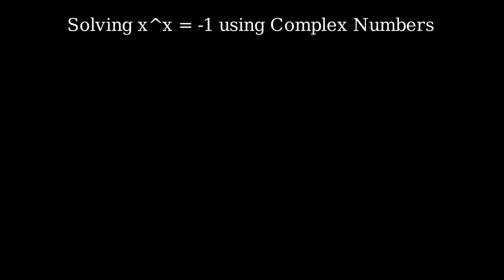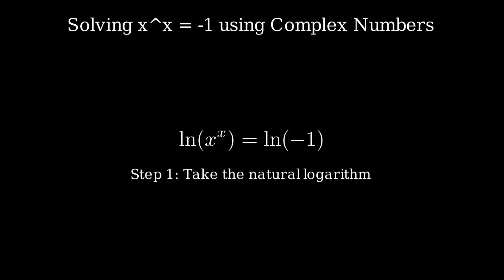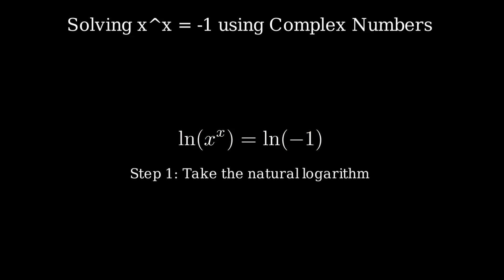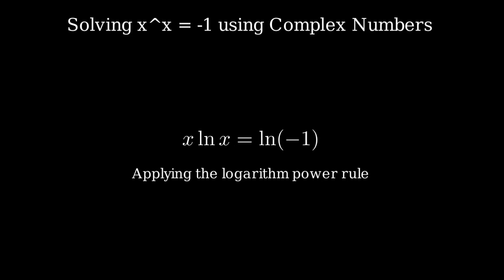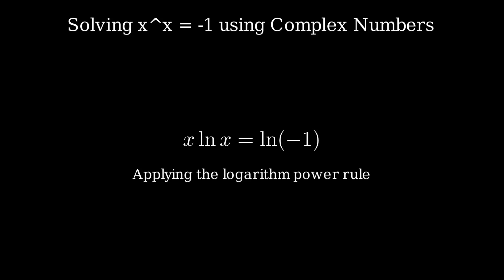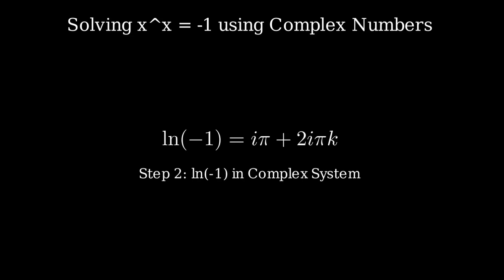Let's begin with the complex number system. The first step is to take the natural logarithm of both sides of the equation. That gives us the natural logarithm of x to the power of x equals the natural logarithm of negative 1. Using the logarithm power rule, we bring down the exponent, rewriting the equation as x times the natural logarithm of x equals the natural logarithm of negative 1. Now, in the complex system,